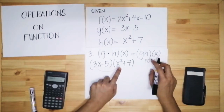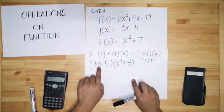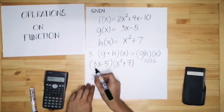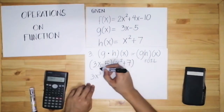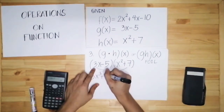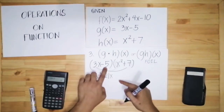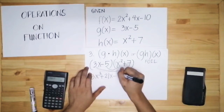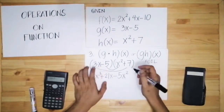Now let's multiply using the FOIL method. Start with the First terms: 3x times x squared. This is the time you add the exponents and multiply the numerical coefficients. 3 times 1 is 3, and x times x squared gives x cubed. So we get 3x cubed. Outer terms: 3x times 7 is 21, so plus 21x. Inner terms: negative 5 times x squared gives negative 5x squared.